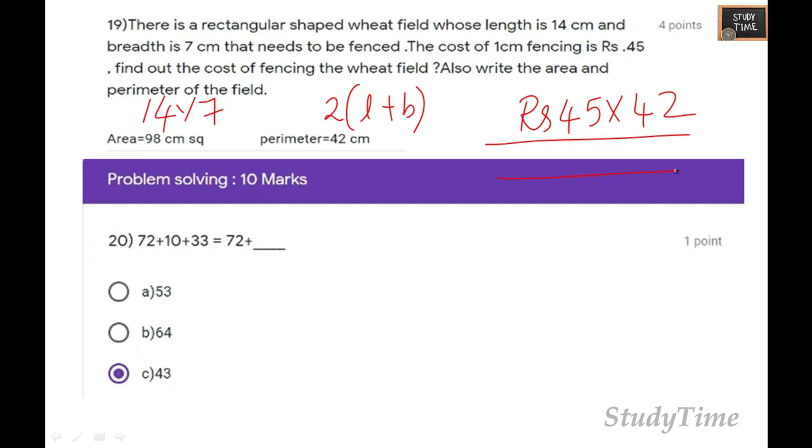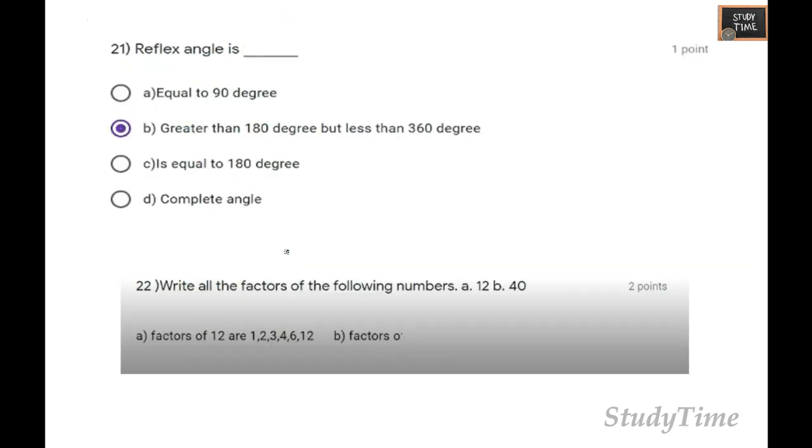Next, 72 plus 10 plus 33 equals 72 plus 43, because when you add 10 and 33, you will be getting 43. Reflex angle is greater than 180 degrees but less than 360 degrees.